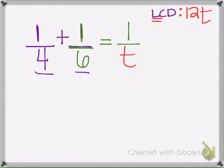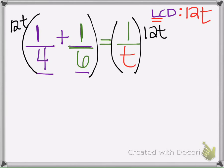So I'm going to multiply the left side by twelve t, and whatever you do to one side, you have to do to the other side. So if it helps you, write this twelve t next to every single fraction. Everything needs to be multiplied by twelve t.